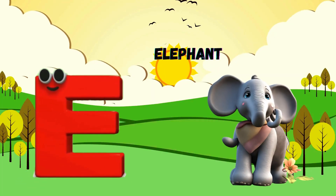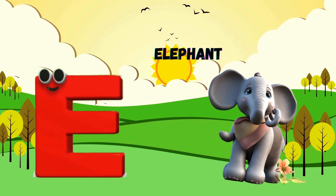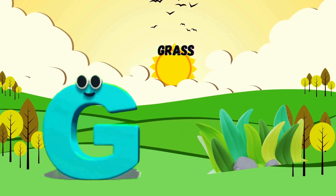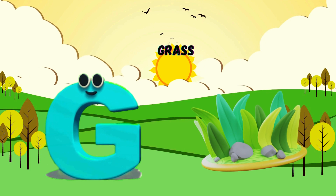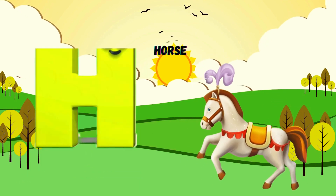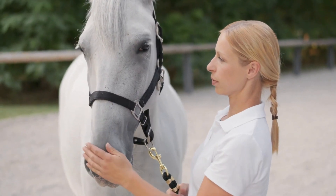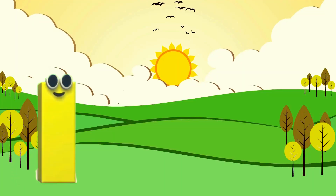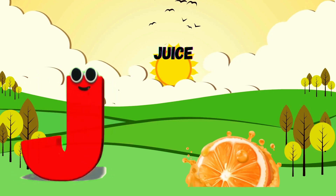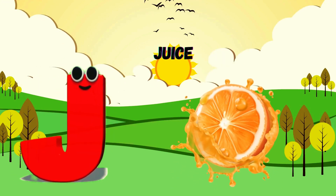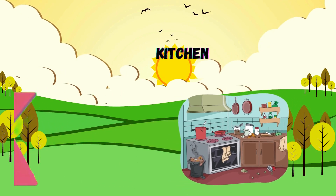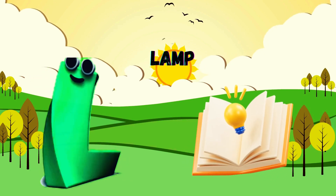E is for Elephant. E, E. Elephant. F is for Friend. F, F. Friend. G is for Grass. G, G. Grass. H is for Horse. H, H. Horse. I is for Igloo. I, I. Igloo. J is for Juice. J, J. Juice. K is for Kitten. K, K. Kitten. L is for Lamb. L, L. Lamb.